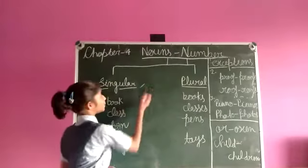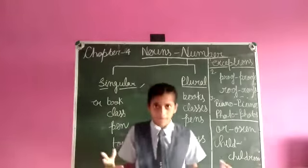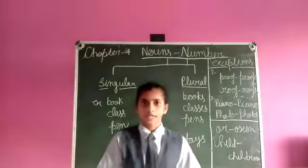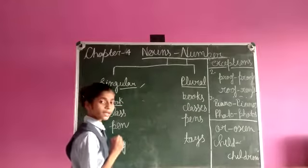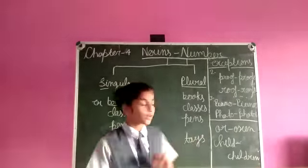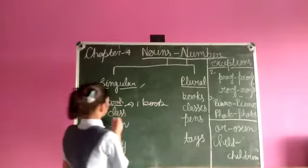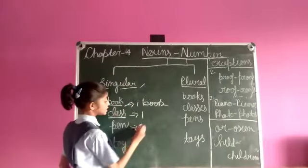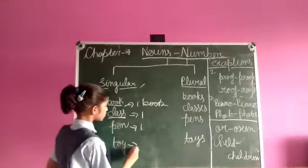What is singular number? If a noun refers to one person or thing, it is called singular number. For example: book refers to one book, class means one class, pen means one pen, toy means one toy.